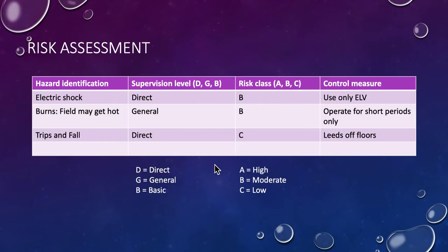But before we do that, a little risk assessment. I've been thinking about electric shock, direct. We're only going to use ELV, that's voltage as well under 24 volts. We could get some burns because the field on my little demo model does get quite warm, so we've got to be careful of that. So we're only going to operate it for short periods. And of course, falls and trips is always keeping our leads and things well off the floors so we don't trip over things.